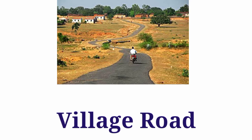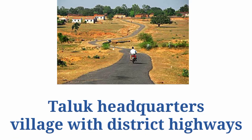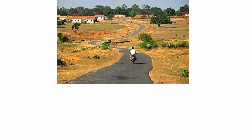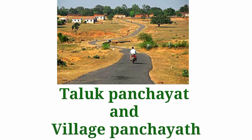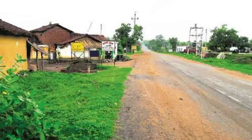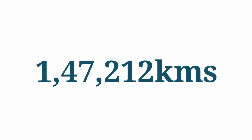The fourth kind of road is village roads. These roads link taluk headquarters and villages to the district highway. Construction, maintenance, and supervision of these roads are under the Taluk Panchayat and Village Panchayat. The quality of these roads is not good even today, and in some parts it is very difficult to travel on them. Karnataka has 1,47,212 kilometers of village roads.